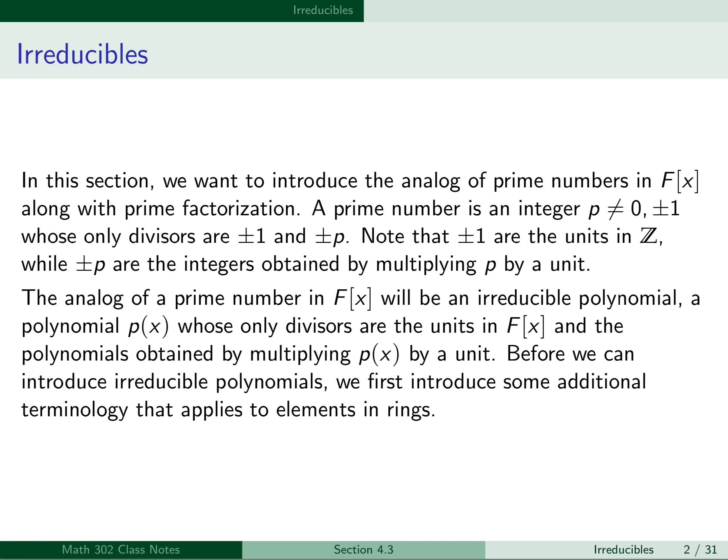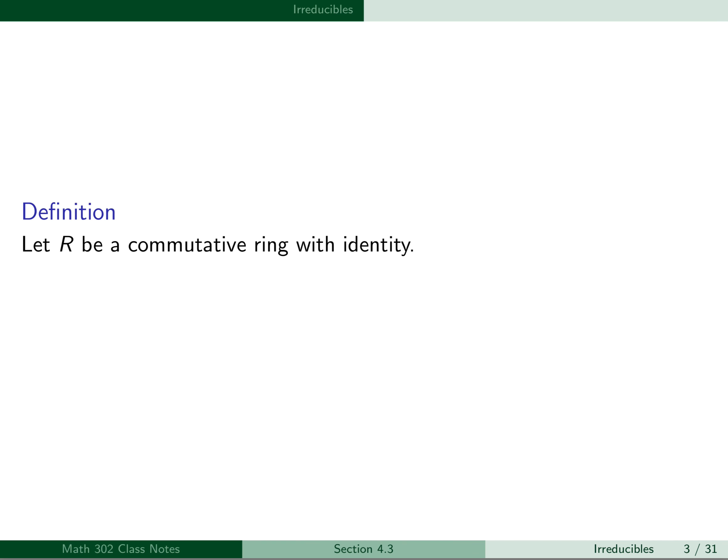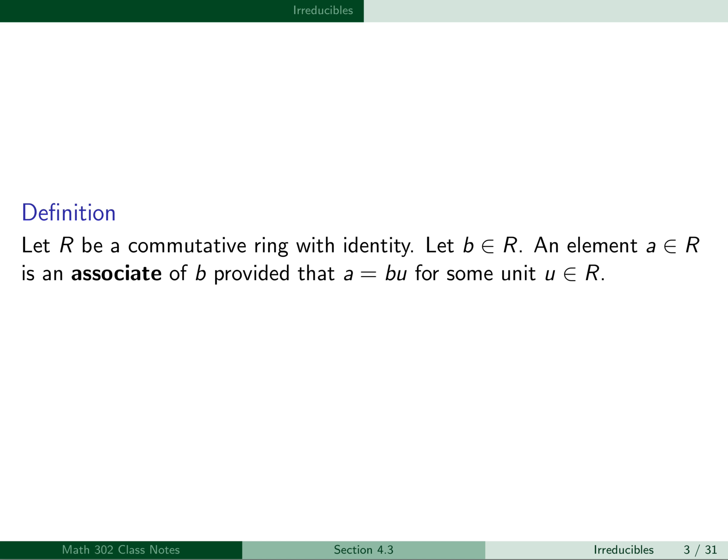Before we can introduce irreducible polynomials, we first introduce some additional terminology that applies to elements in rings. For our first definition, let R be a commutative ring with identity, let b be an element of R. An element a in R is an associate of b, provided that a equals bu for some unit u in R.